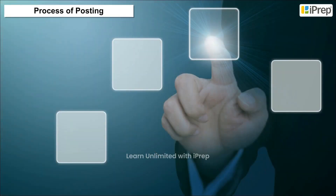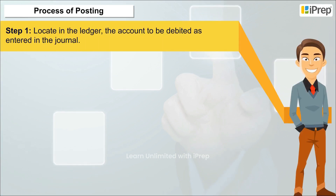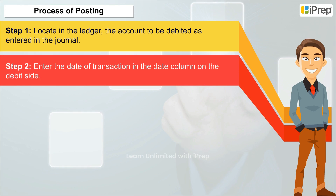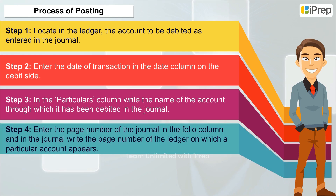Process of Posting. The complete process of posting includes: Step 1 — Locate in the ledger the account to be debited as entered in the journal. Step 2 — Enter the date of transaction in the date column of the debit side. Step 3 — In the particulars column, write the name of the account through which it has been debited in the journal.